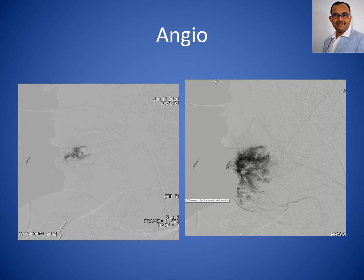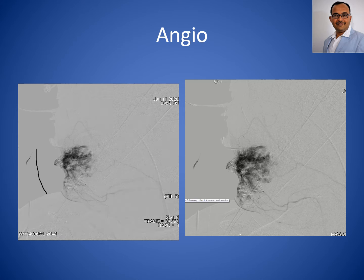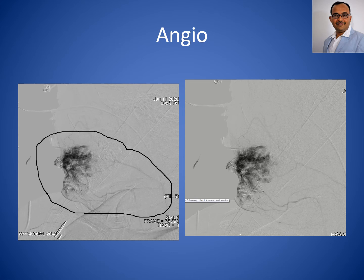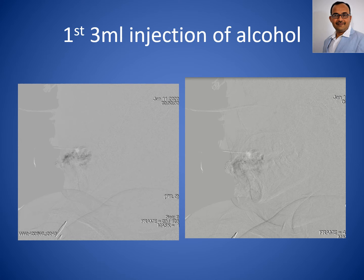In terms of technique, with direct puncture angiography, we first assess how much contrast is required and which are the outflow tracks and channels from this lesion. According to that, we decide the dose of ethanol and the speed of injection of absolute ethanol within the lesion. With the negative roadmap technique, we can track the absolute ethanol within the lesion.